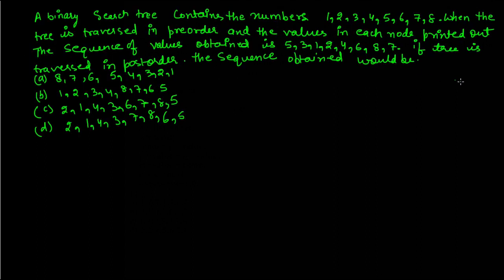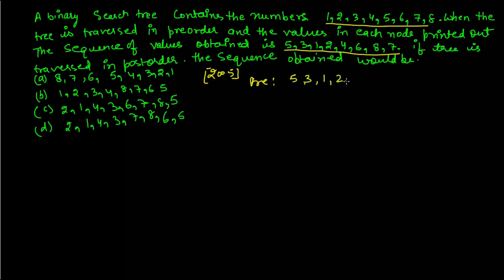This question was asked in GATE 2005. A binary search tree contains numbers 1 to 8. When the tree is traversed in pre-order, the sequence obtained is: 5, 3, 1, 2, 4, 6, 8, 7. We need to find the post-order traversal of this tree.